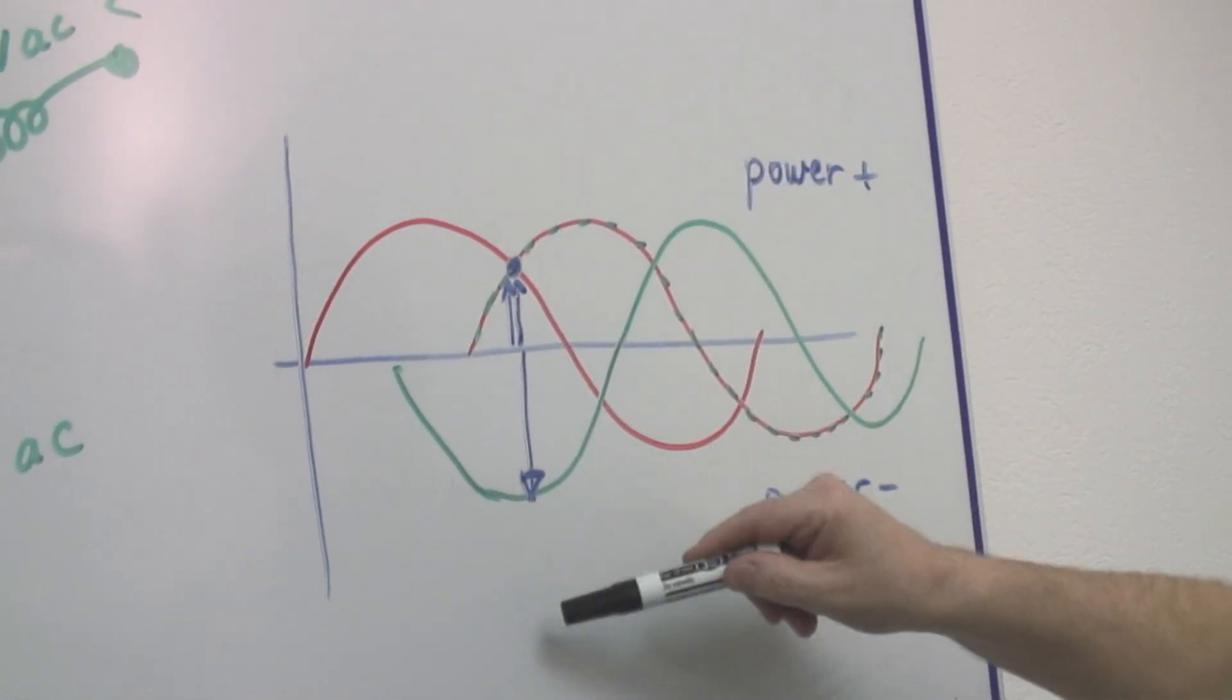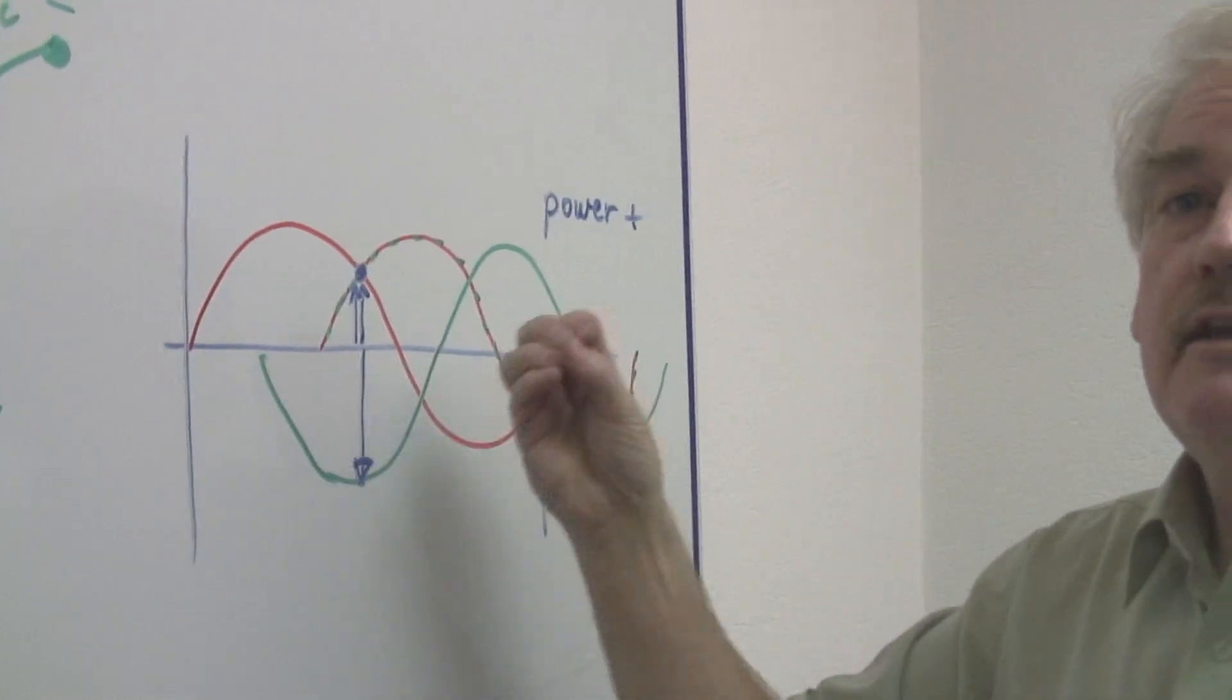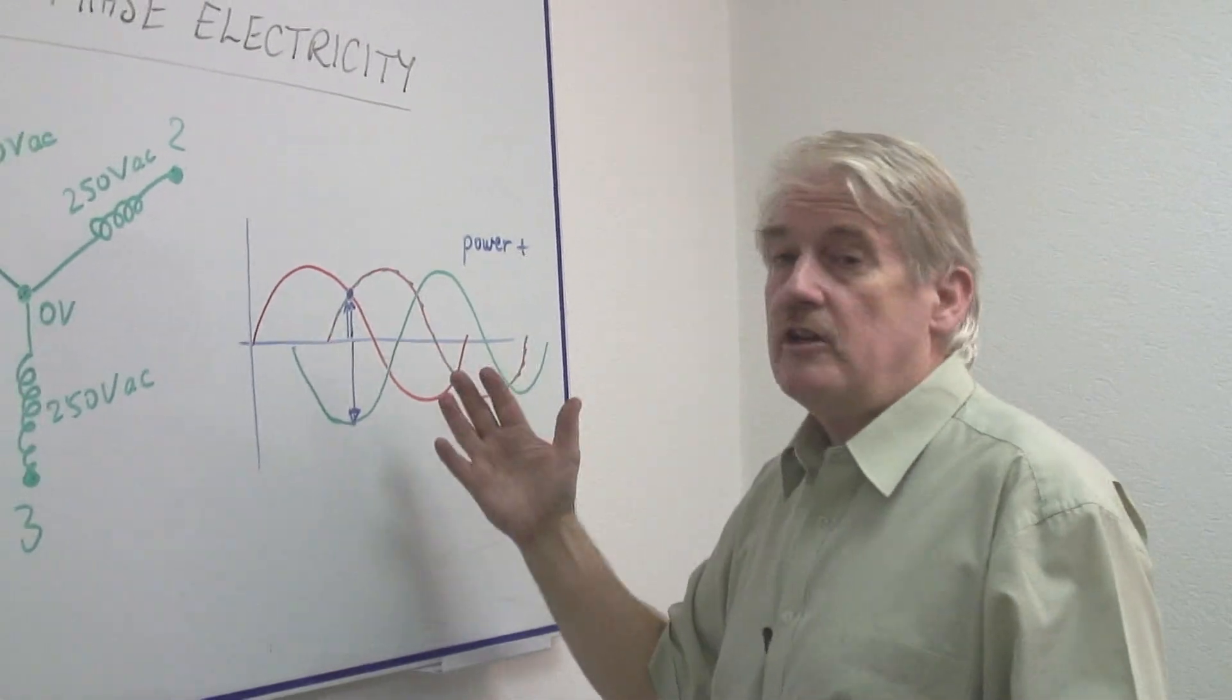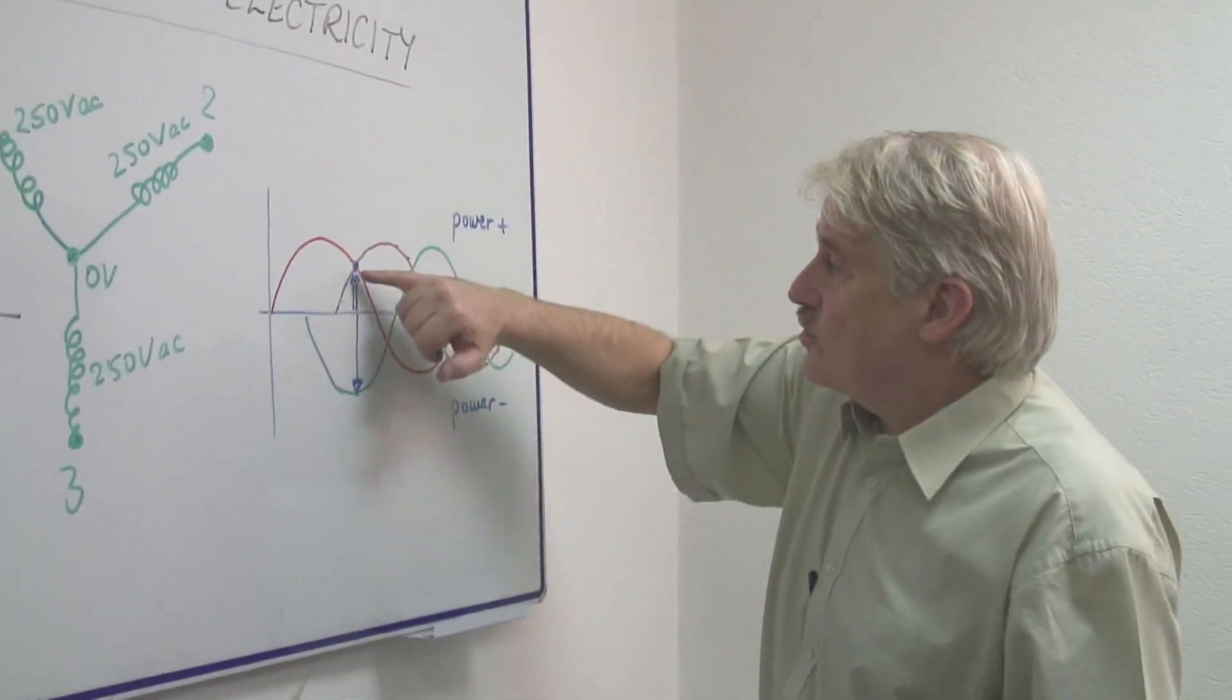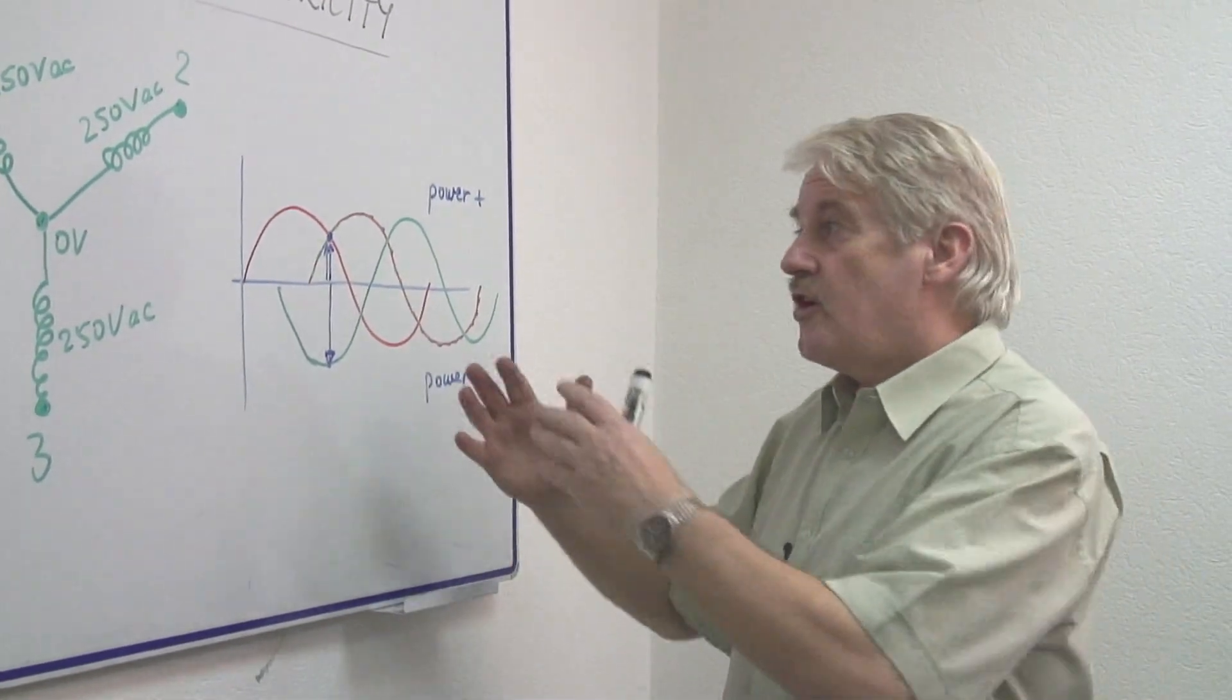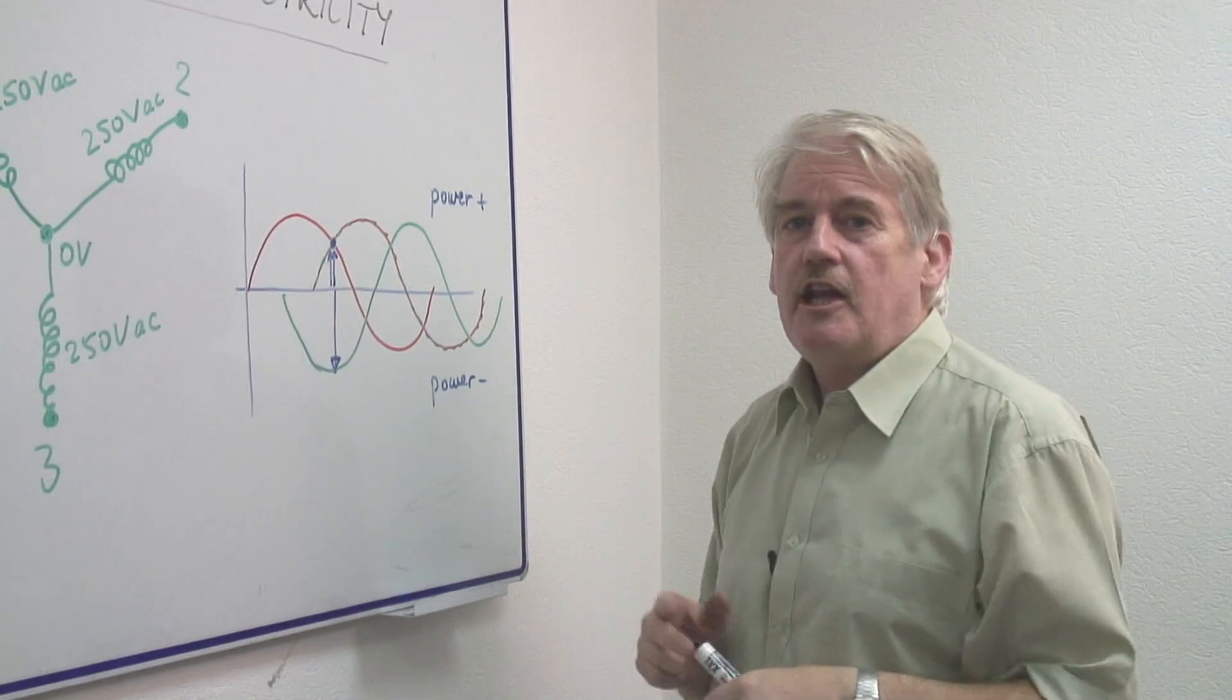And at any time, the machine is doing the same amount of work. In fact, it's doing nothing, essentially. Because for these two, it's pushing power in. This one is pulling power out. So overall, there is a balance of power being generated.